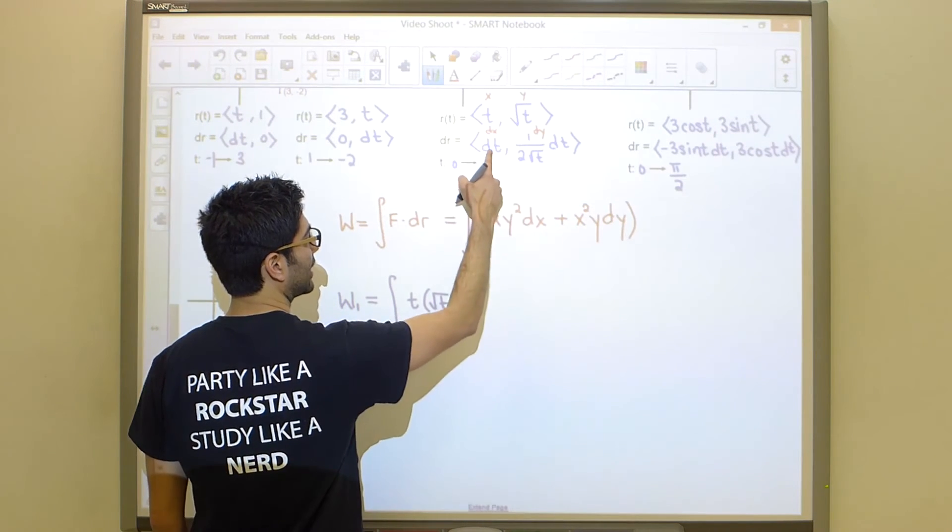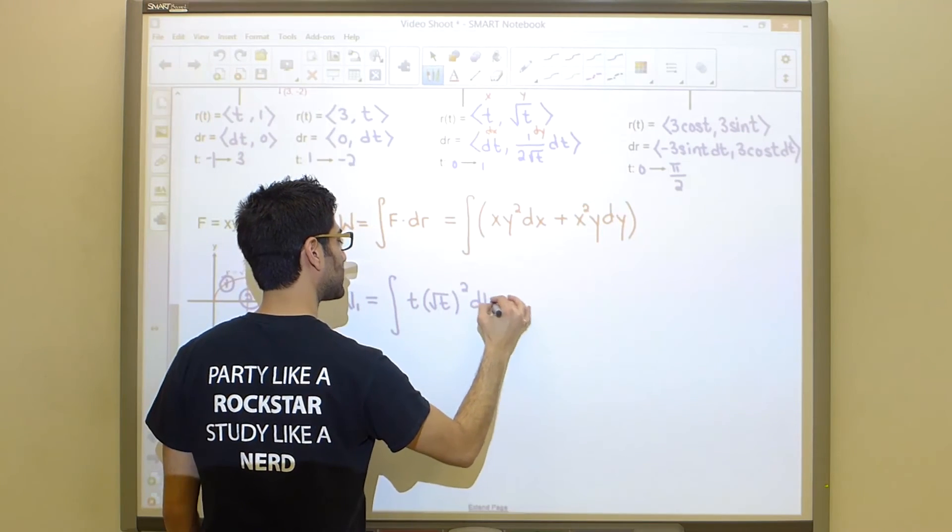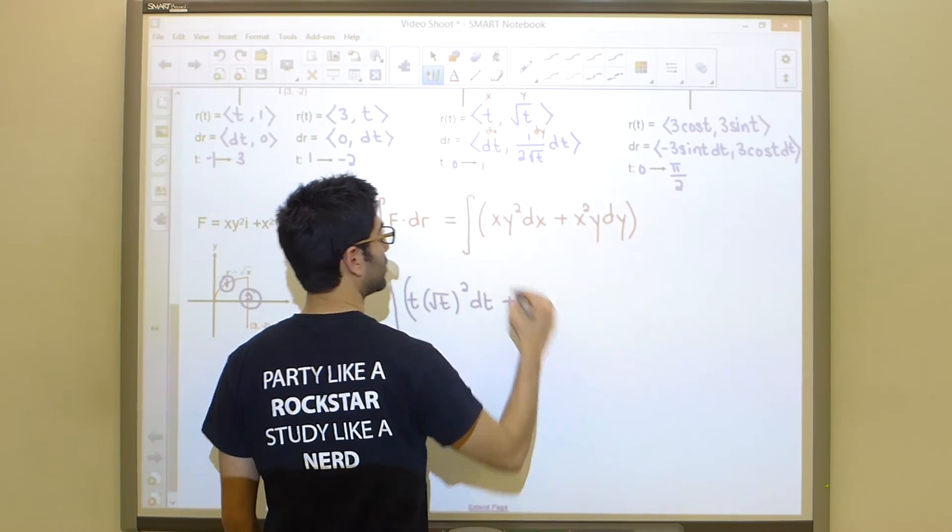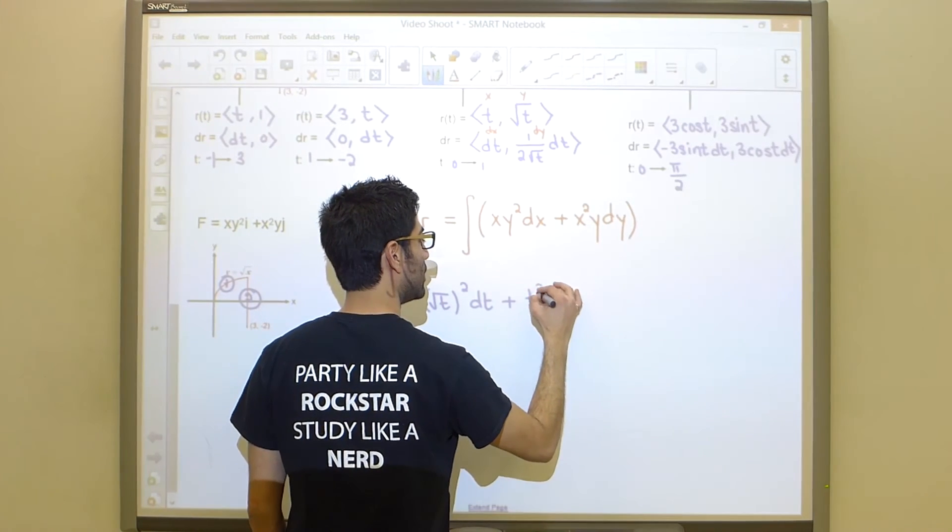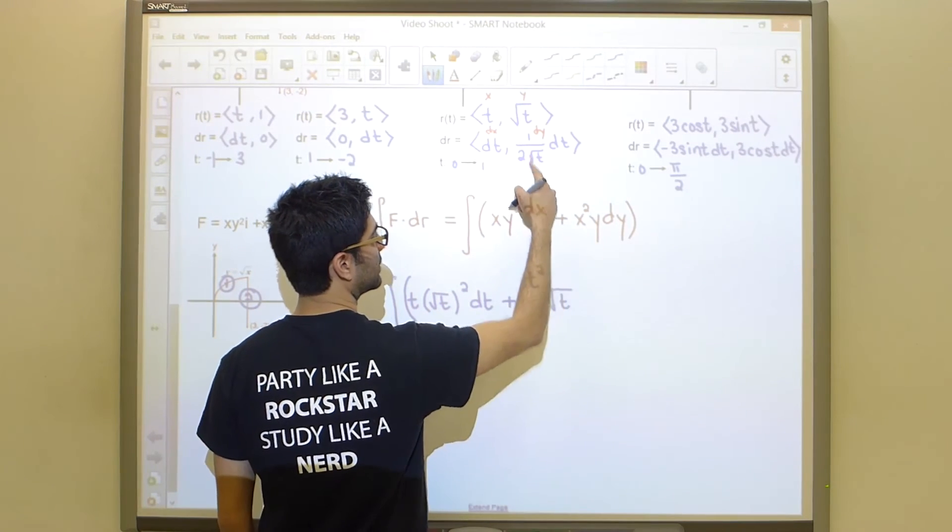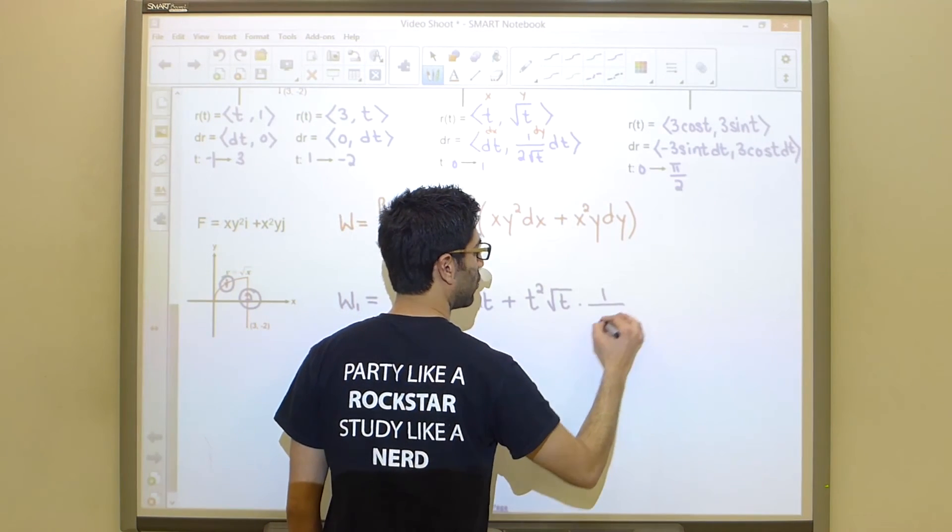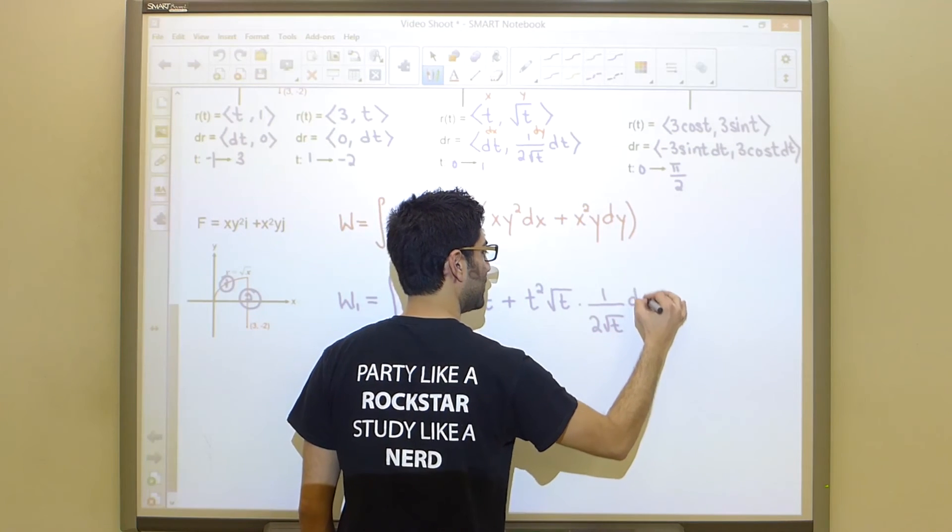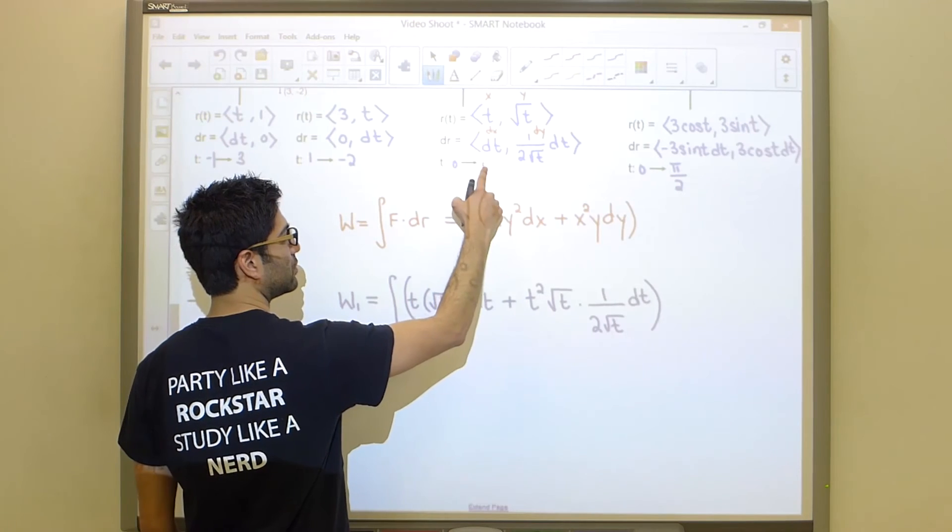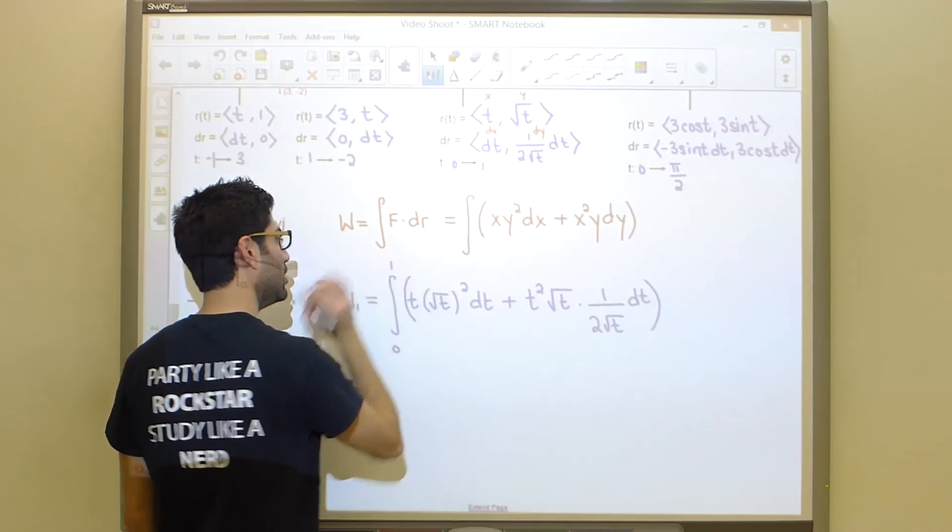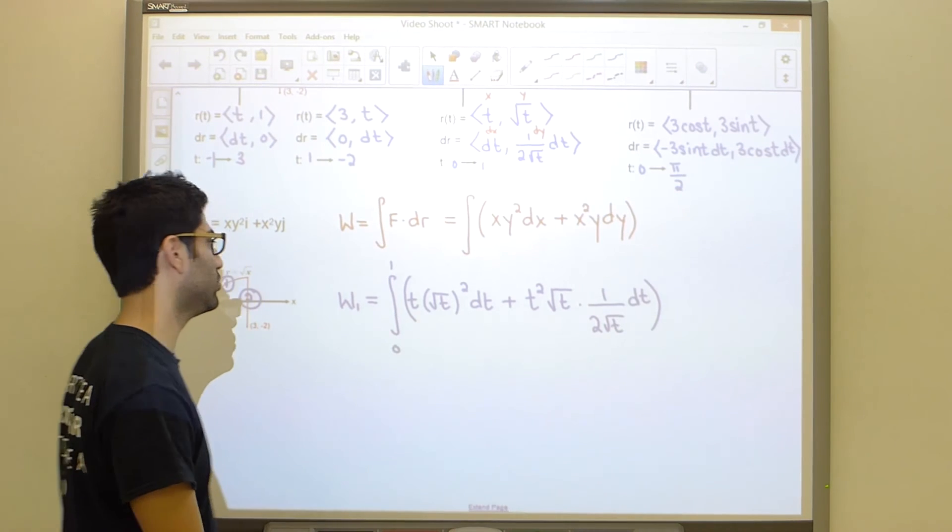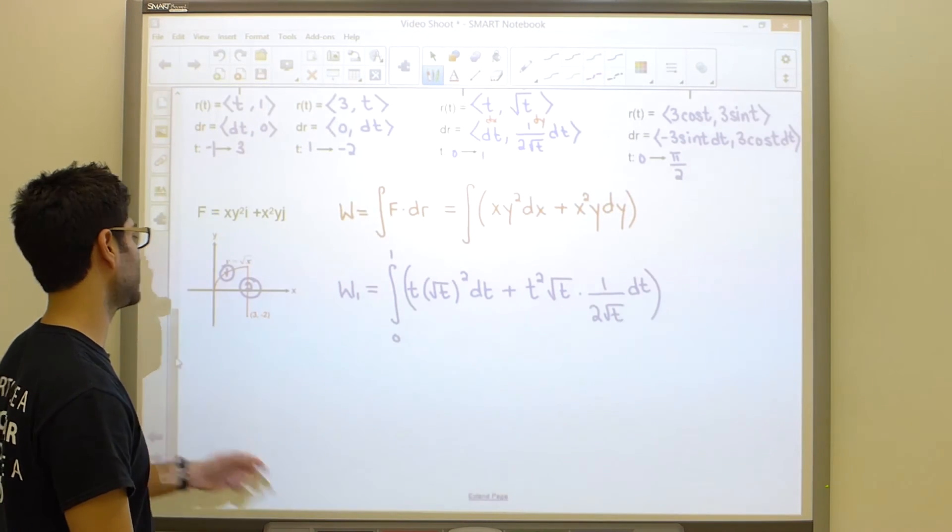So xy squared is going to be this times this guy squared. So it's going to be t times the square root of t all squared. Anywhere I see dx, I can simply write dt. Repeat the process here. x squared y. So x squared is t squared. y is the square root of t. And every dy becomes this piece right here. So 1 over 2 root t dt. And we must evaluate this integral from 0 to 1. So this is really not very challenging at all, guys. Let's just do this. It shouldn't take more than a minute to evaluate this integral.